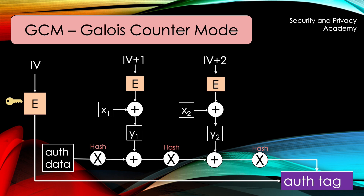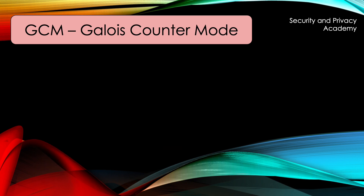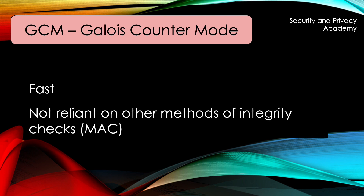The algorithm is a bit more complicated, but the main idea and order of operations is still there. You can tell me in the comments if you'd like to have a deeper dive into Galois counter mode. To conclude the modes of operations, GCM is very fast due to the multiplications which are done in parallel to the actual counter mode. It is also not reliant on other methods of integrity, such as MACs, and is therefore self-contained and serves the protection goals confidentiality, integrity and authenticity.